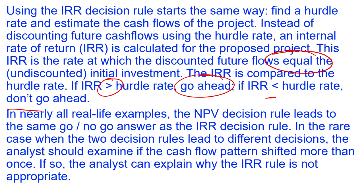This is a capital budgeting question without any numbers — just the theory: net present value, internal rate of return, types of costs, inflation, and income taxes. The approach is to go through step by step and answer each requirement. We're not writing lengthy paragraphs — just explaining, identifying, and defining. Each requirement carries points, so we need to address all of them to earn full credit and contribute to a passing score on the exam.